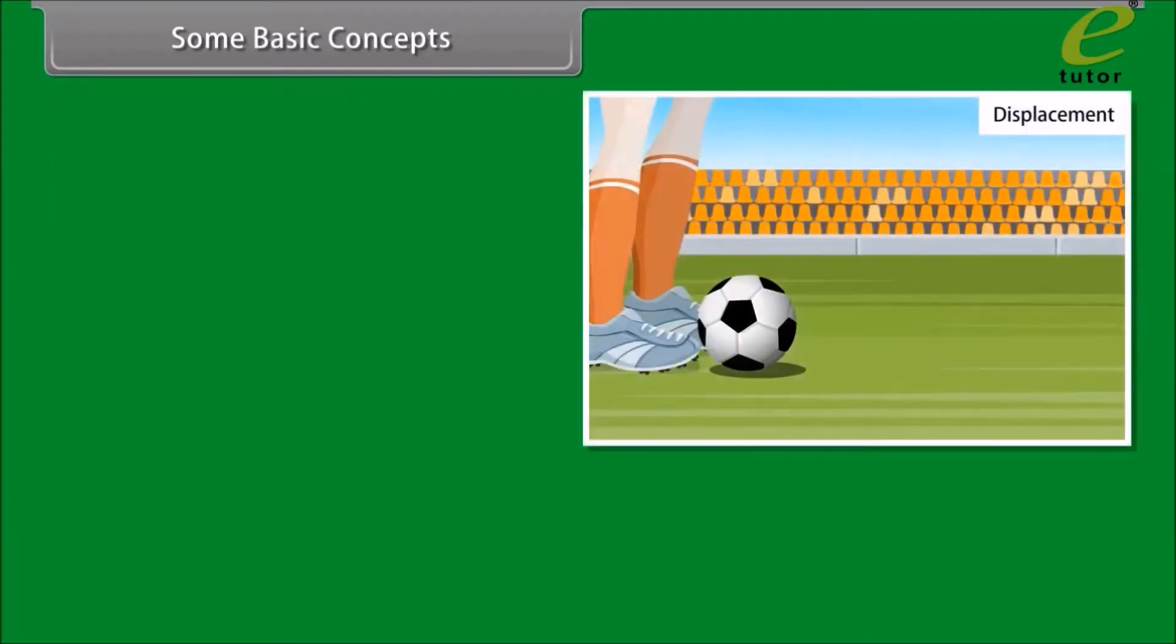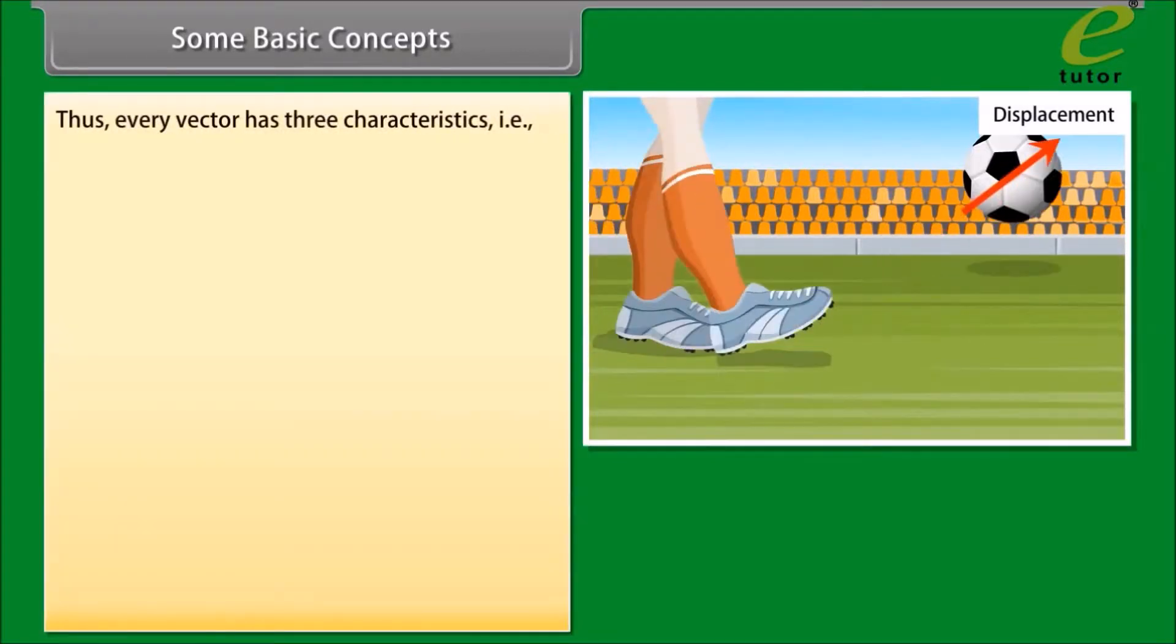Such a directed line segment represents a vector and is denoted by vector AB or vector A. A practical example of vector. Thus, every vector has three characteristics: magnitude, direction, and support.